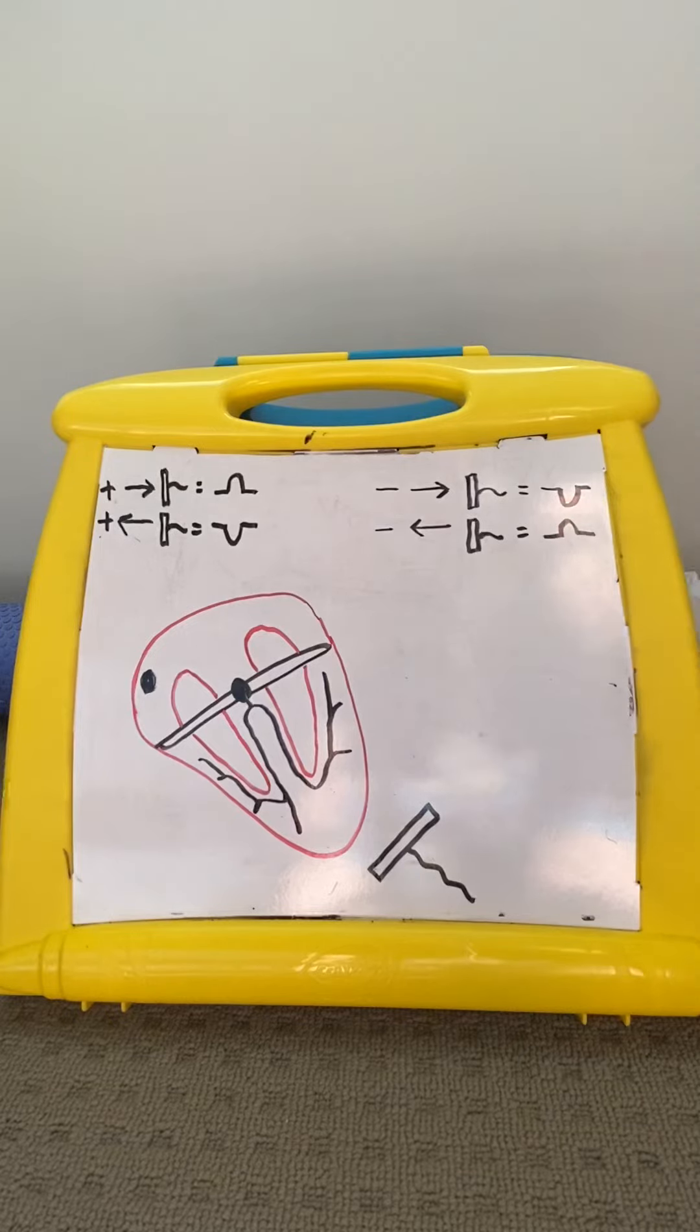So the first thing is ECGs measure the electrical activity of a heart, and it's looking at the movement of positive things into or out of cells. If a muscle cell becomes positive inside the cell, it will contract.